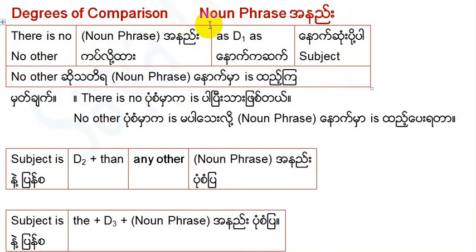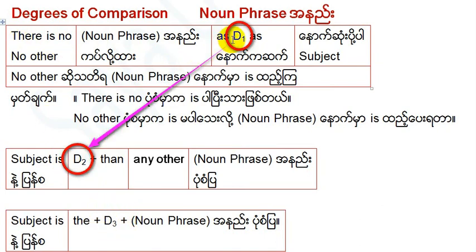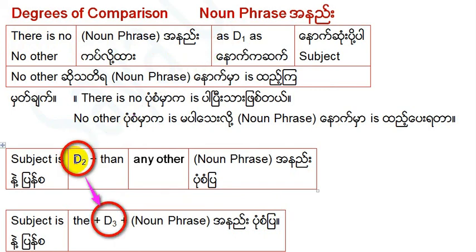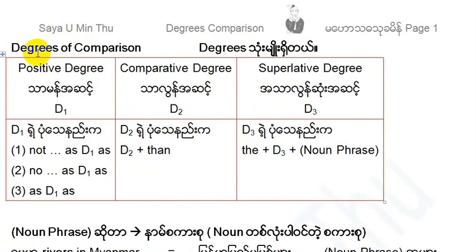Degrees of comparison, noun phrase. Degrees: D1, D2, D3. There are three degrees of comparison.